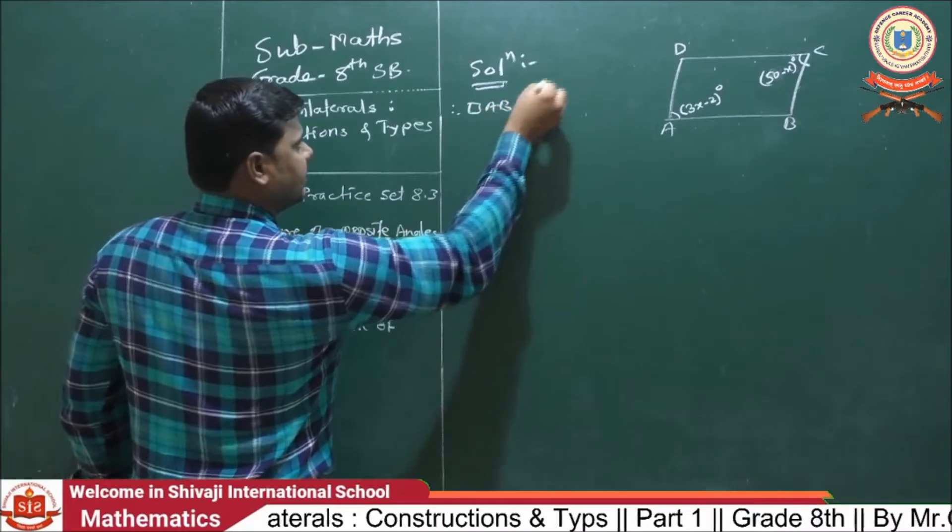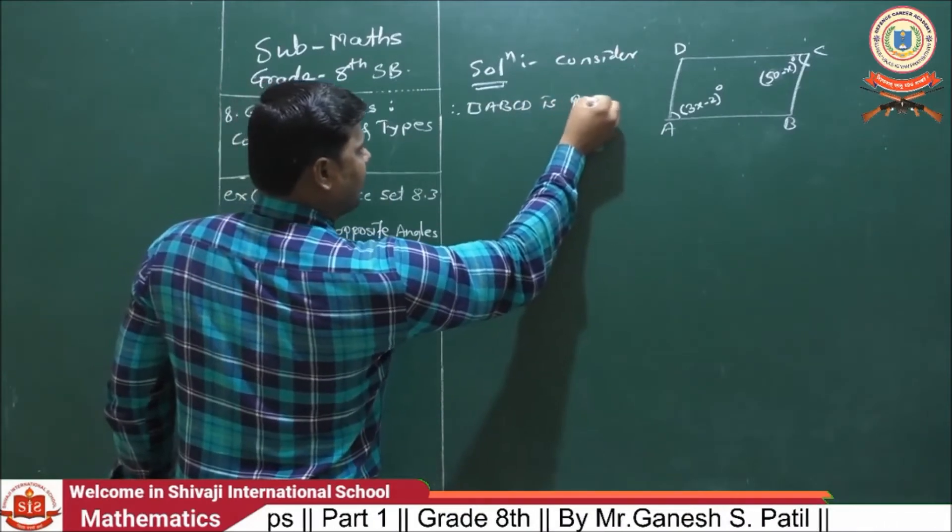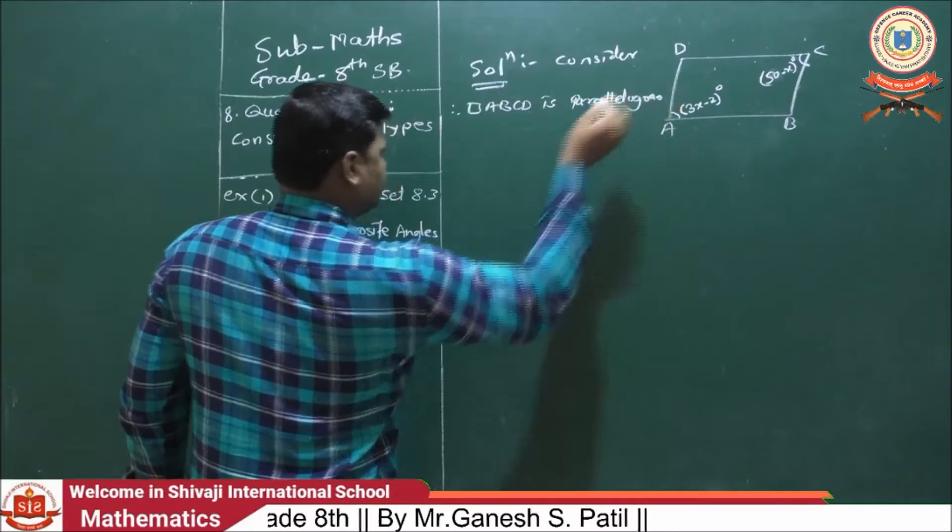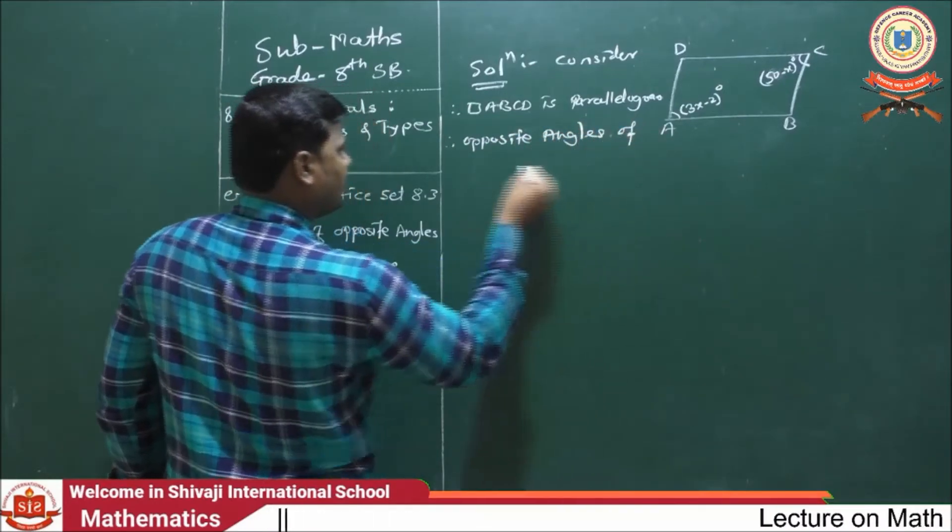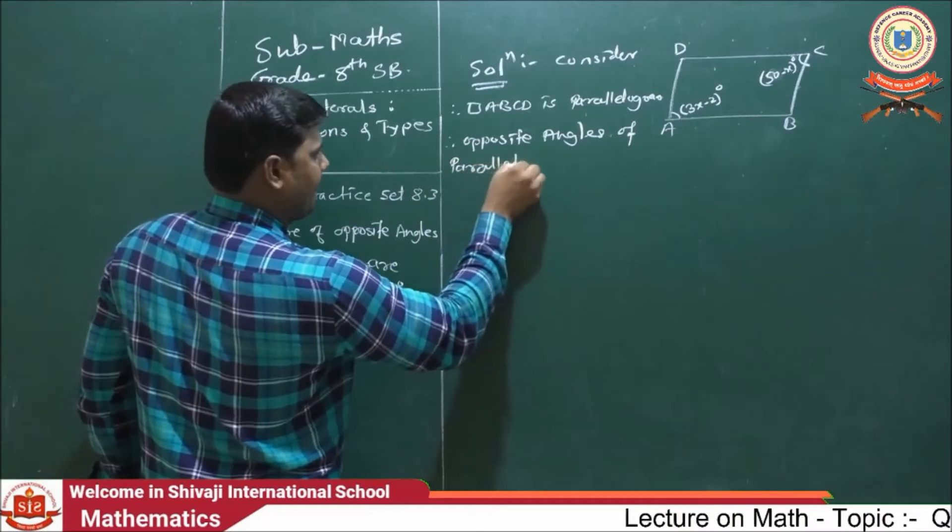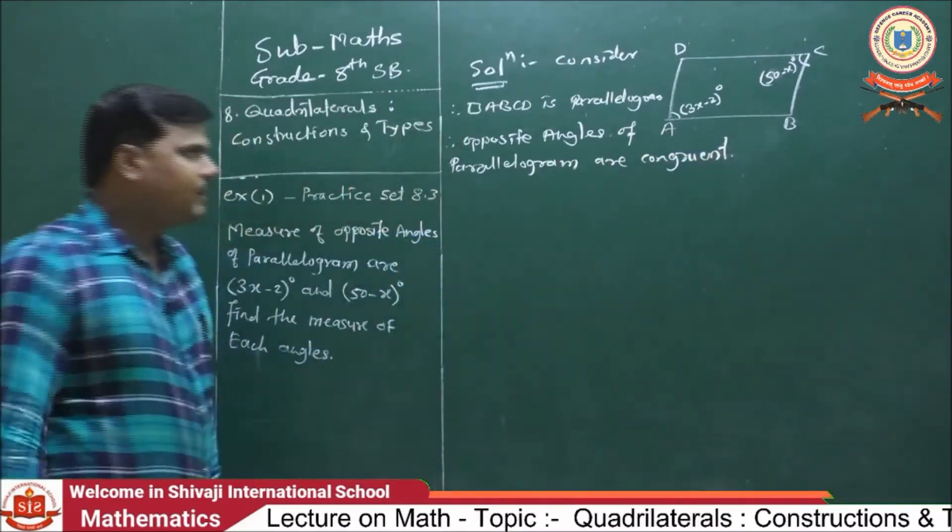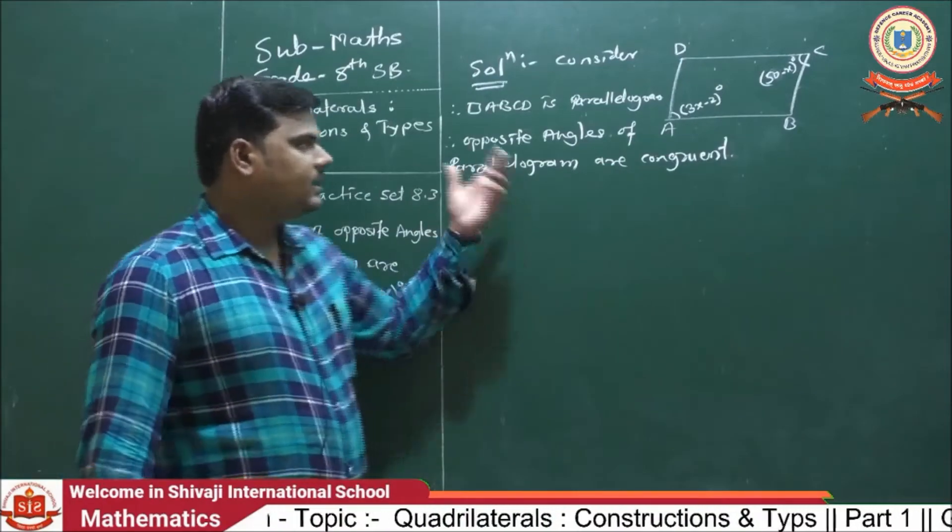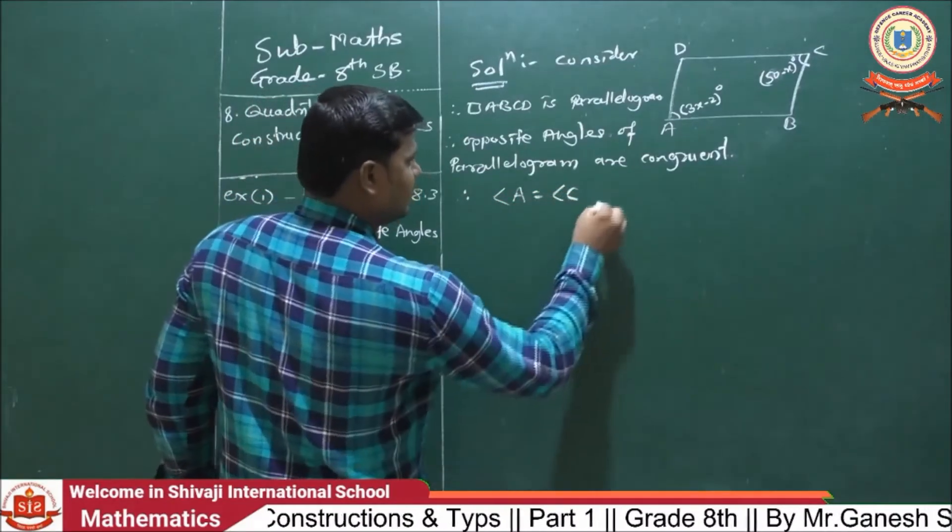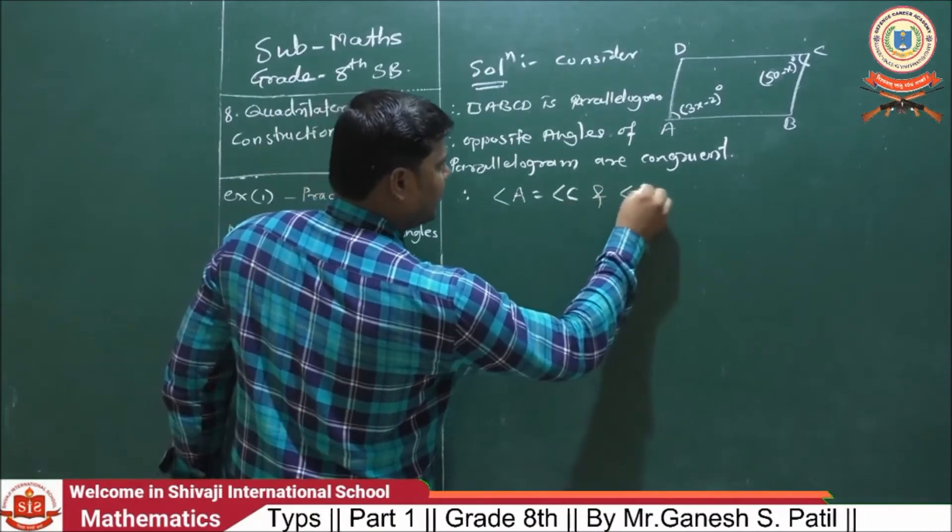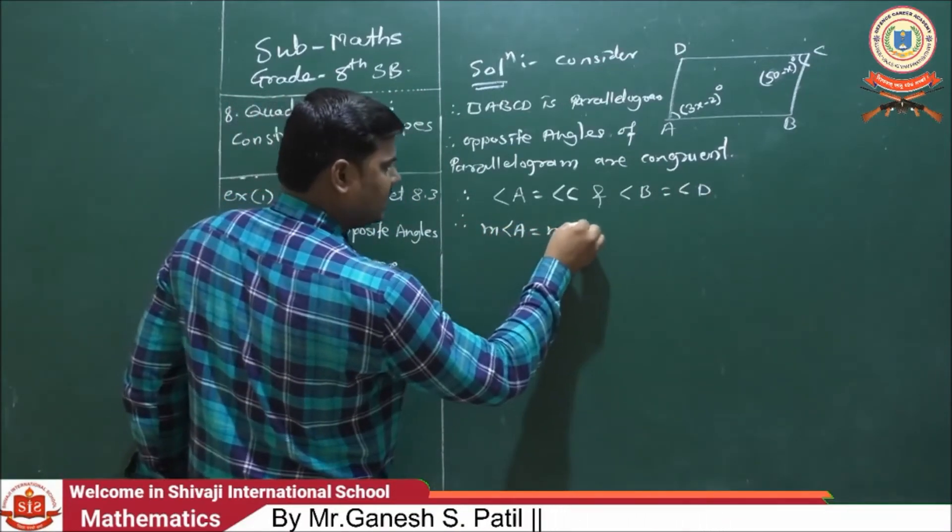Consider quadrilateral ABCD is a parallelogram. Then, opposite angles of parallelogram are congruent. Suppose angle A is equal to angle C and angle B is equal to angle D. Means, its measure is also equal. Measure of angle C equals measure of angle A.